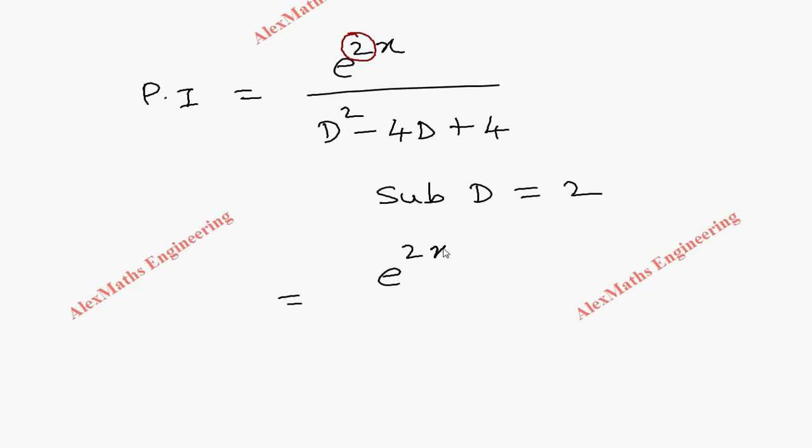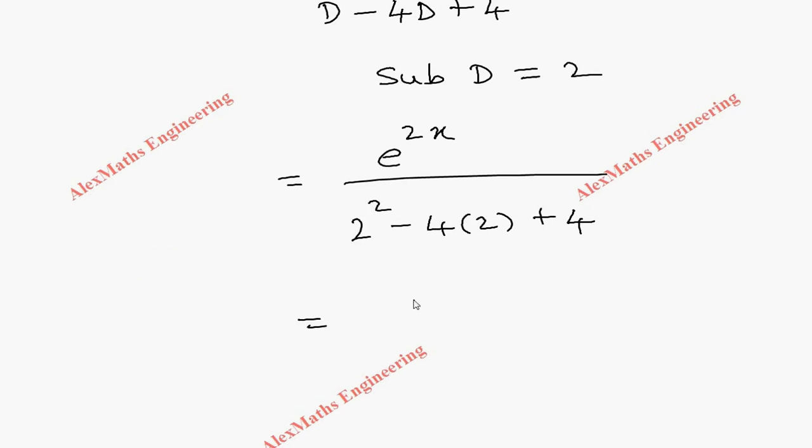Numerator e^(2x) as it is, divided by 2² - 4(2) + 4. But in the denominator we get totally 0 because this is 4 + 4 - 8 = 0. So when this is the case, we have to multiply by x in the numerator and differentiate the denominator.